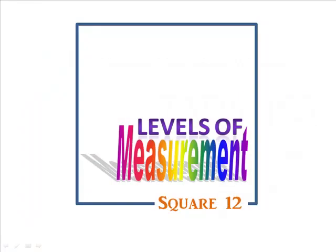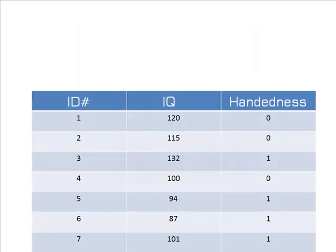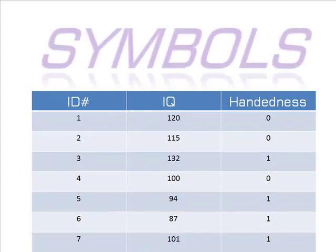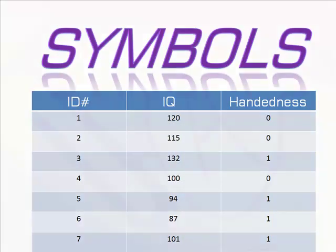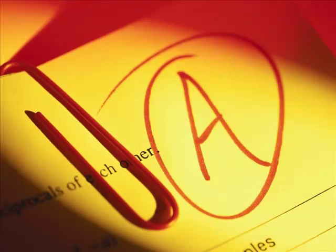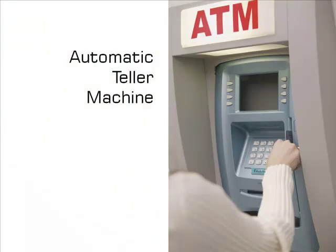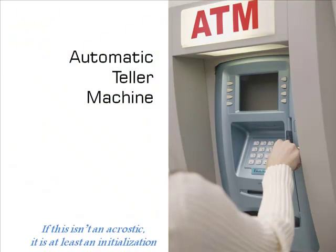At square 12, you take a closer look at your data table. You have three columns of numbers, but what do these numbers mean? Letters and numbers are symbols, and they can be used in several ways. The letter A can be a grade in a class, or it can represent a whole word in an acrostic, as in ATM for Automatic Teller Machine.